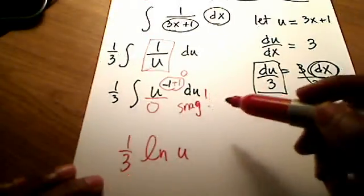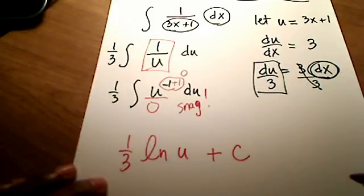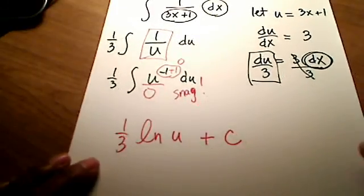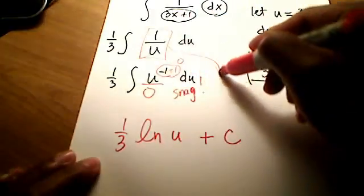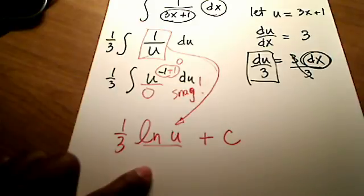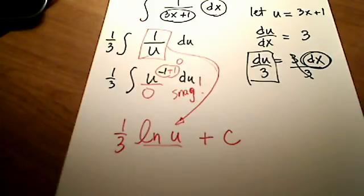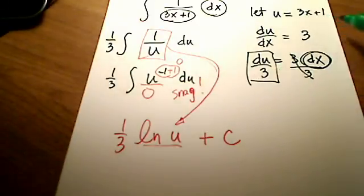Since this is an indefinite integral, I'll put plus c at the end. The antiderivative of 1 over u was natural log of u. But we don't want our answer in terms of u - we want it in terms of x. So I'll substitute back 3x + 1 in place of u.